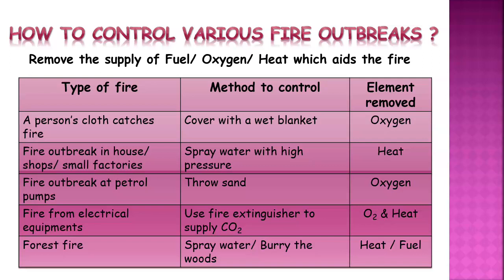The fourth example is fire from electrical equipment. We cannot use water due to the risk of electric shock, so we use a fire extinguisher, which supplies carbon dioxide along with water. The carbon dioxide eliminates oxygen and also reduces the heat. The last example is forest fire — spray water to reduce heat and also bury the woods to remove the fuel.